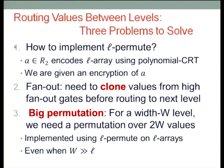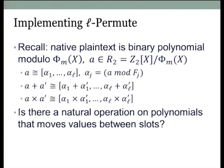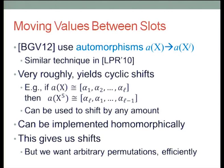I'm basically only going to have time to talk about the first point: how to implement L-permute. The native plaintext is binary polynomials modulo the m-th cyclotomic polynomial, which encodes L different plaintext elements, with addition and multiplication done pointwise. The question is: is there a natural operation on polynomials that you can apply to move these values between slots? It turns out there is — this was used in BGV.